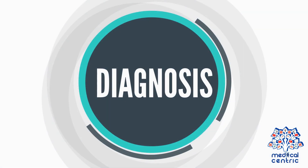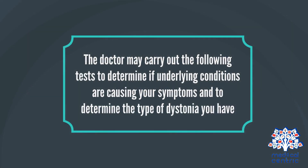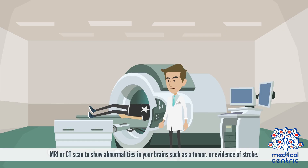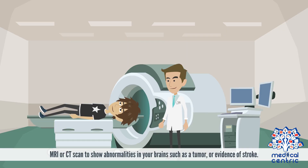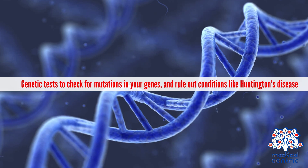To make a diagnosis, the doctor will review your medical and family history. The doctor may carry out the following tests: blood and urine tests to check for toxins, infections, and organ function; MRI or CT scan to show abnormalities in your brain such as a tumor or evidence of stroke; and genetic tests to check for mutations in your genes and rule out conditions like Huntington's disease.